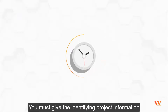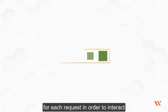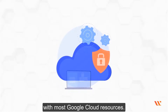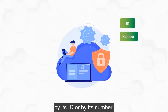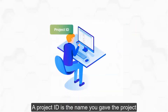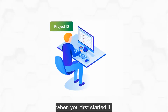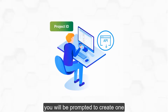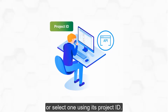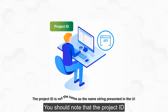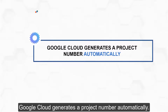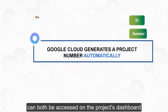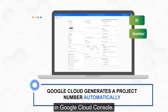You must provide the identifying project information for each request in order to interact with most Google Cloud resources. A project can be identified in one of two ways: by its ID or by its number. A project ID is a name you gave the project when you first started it. If you use an API that requires a project, you'll be prompted to create one or select one using its project ID. Note that the project ID is not the same as the name string presented in the UI. Google Cloud generates a project number automatically, and both can be accessed on the project's dashboard in Google Cloud Console.